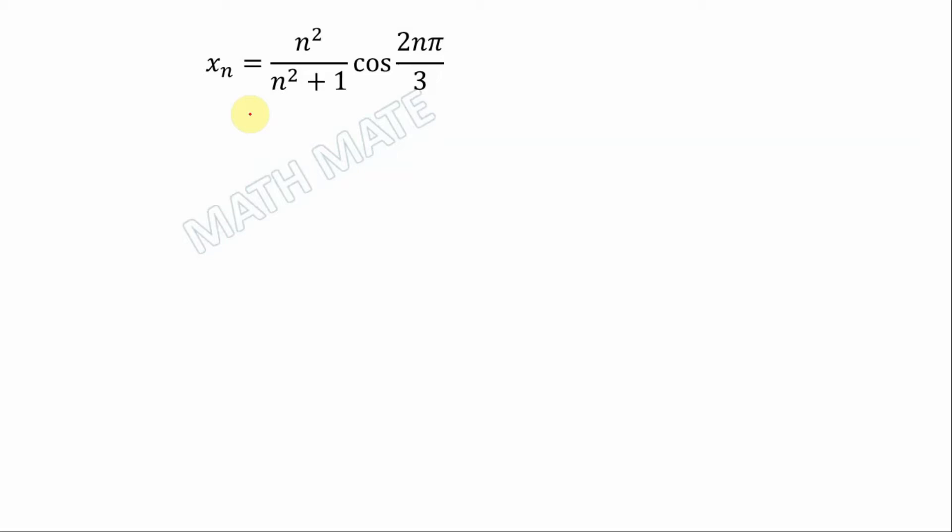Assalamu alaikum mathmate. Today we want to find the lower and upper limit of x_n where x_n equals n² divided by n² plus 1, multiplied by cosine 2nπ/3. So let's start.